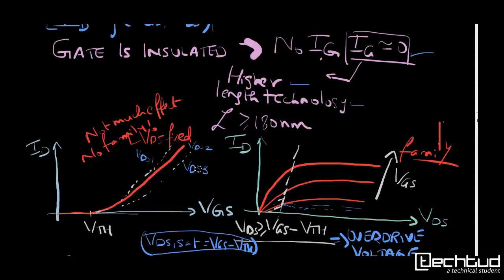For ID vs VDS, ID depends on VGS. So suppose VGS changes, then ID changes. We can see the same thing in the curves. In that curve for output characteristics ID vs VDS, we see that one curve is there which shows VGS-VTH line for VDS.